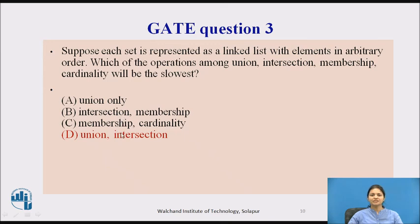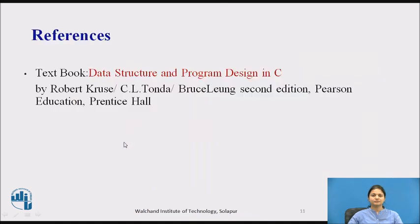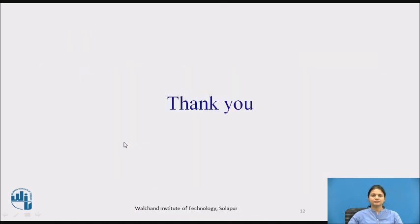So only two options remain, B and D. In union we match both cases and in intersection we find comparisons between both members. Option D — intersection — will be the slowest compared to the others. Thank you.